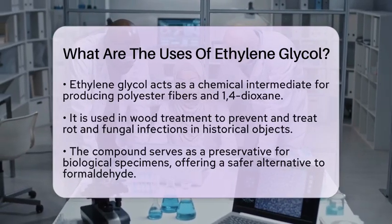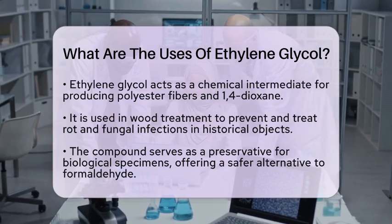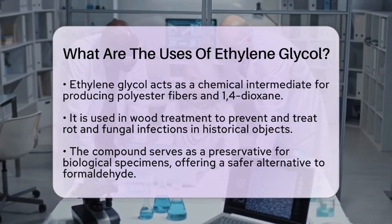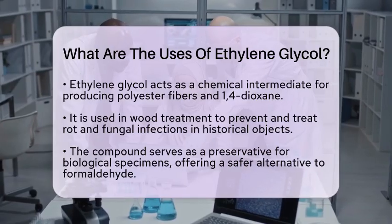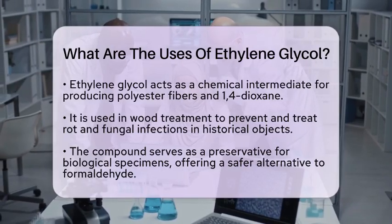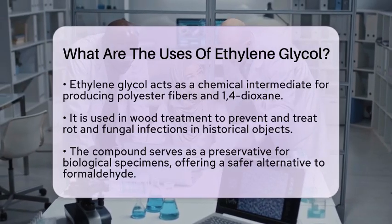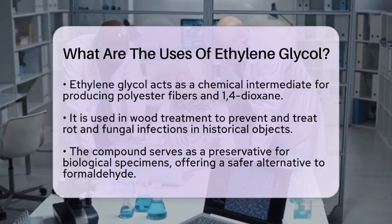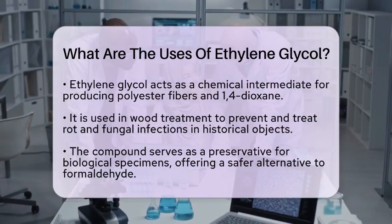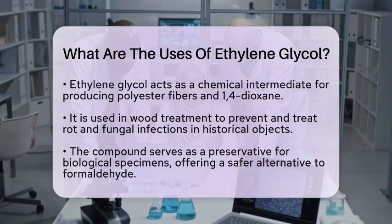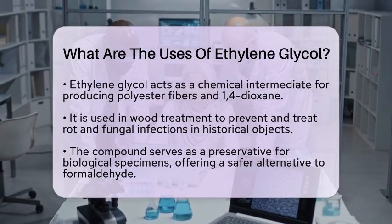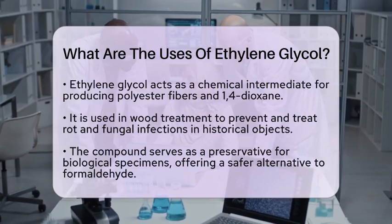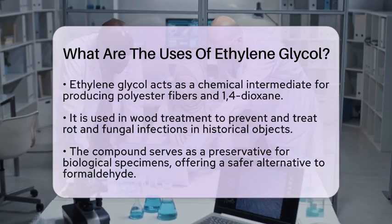Interestingly, a derivative of ethylene glycol known as ethylene glycol dinitrate is used in the manufacture of dynamite. This derivative allows explosives to be used in colder temperatures by lowering the freezing point of nitroglycerin.